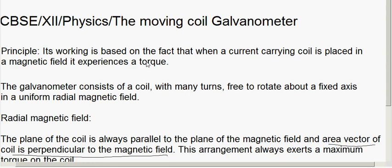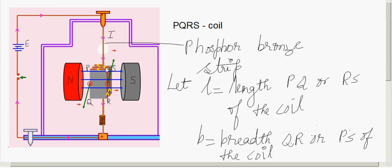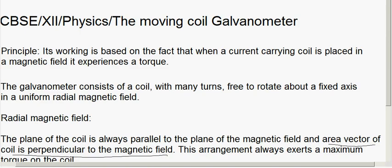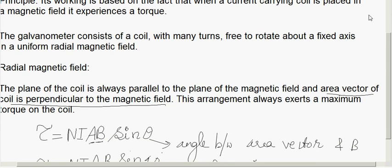We also studied about the construction of the galvanometer. It has a coil PQRS of N turns. Let A be the area of the coil — l is the length PQ and QR is taken as b, so l into b is taken as A. This coil is placed in a radial magnetic field such that the coil always experiences the maximum torque, i.e., theta is 90 degrees — the angle between the area vector and B is 90 degrees — so we get the maximum torque.